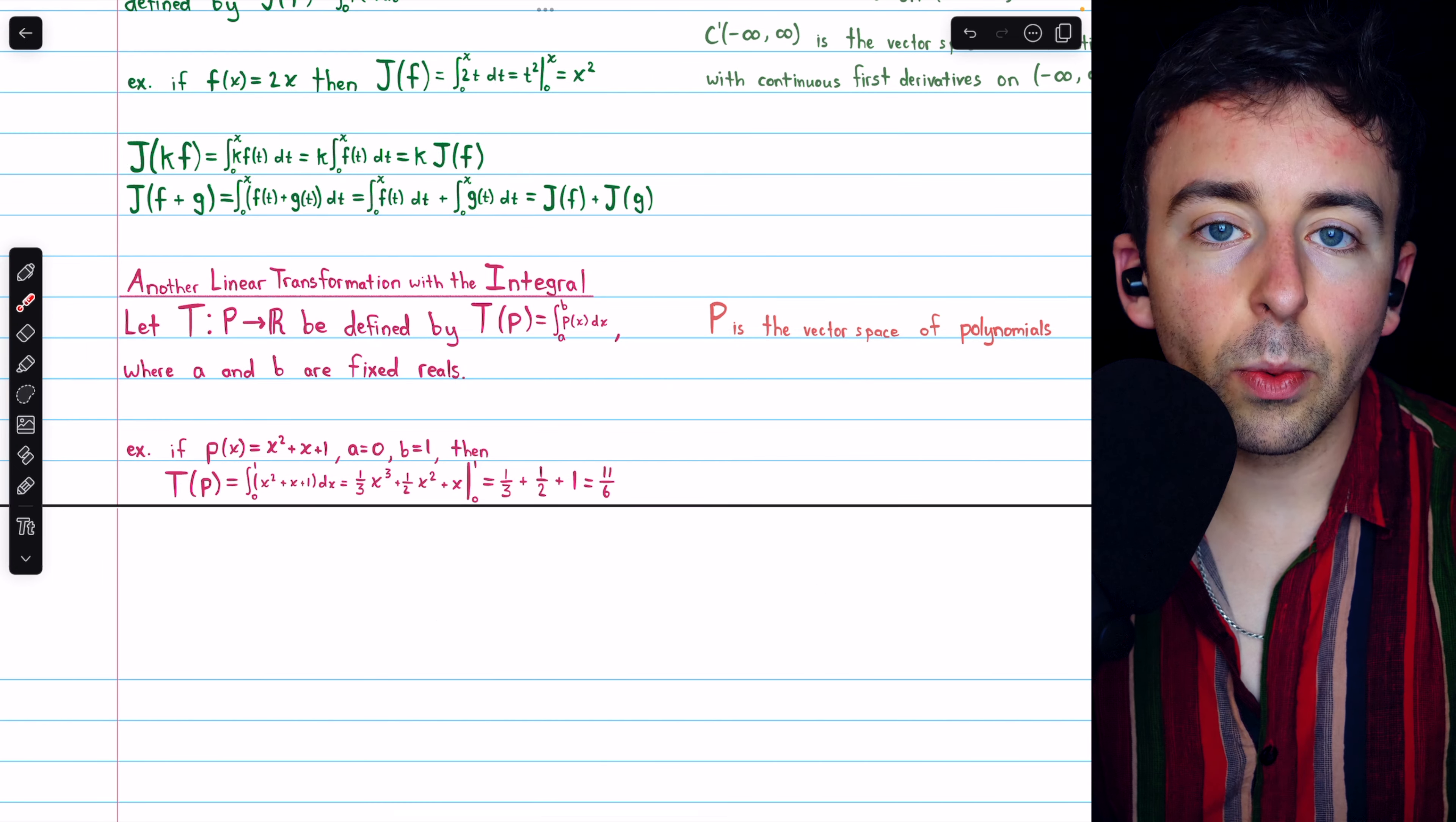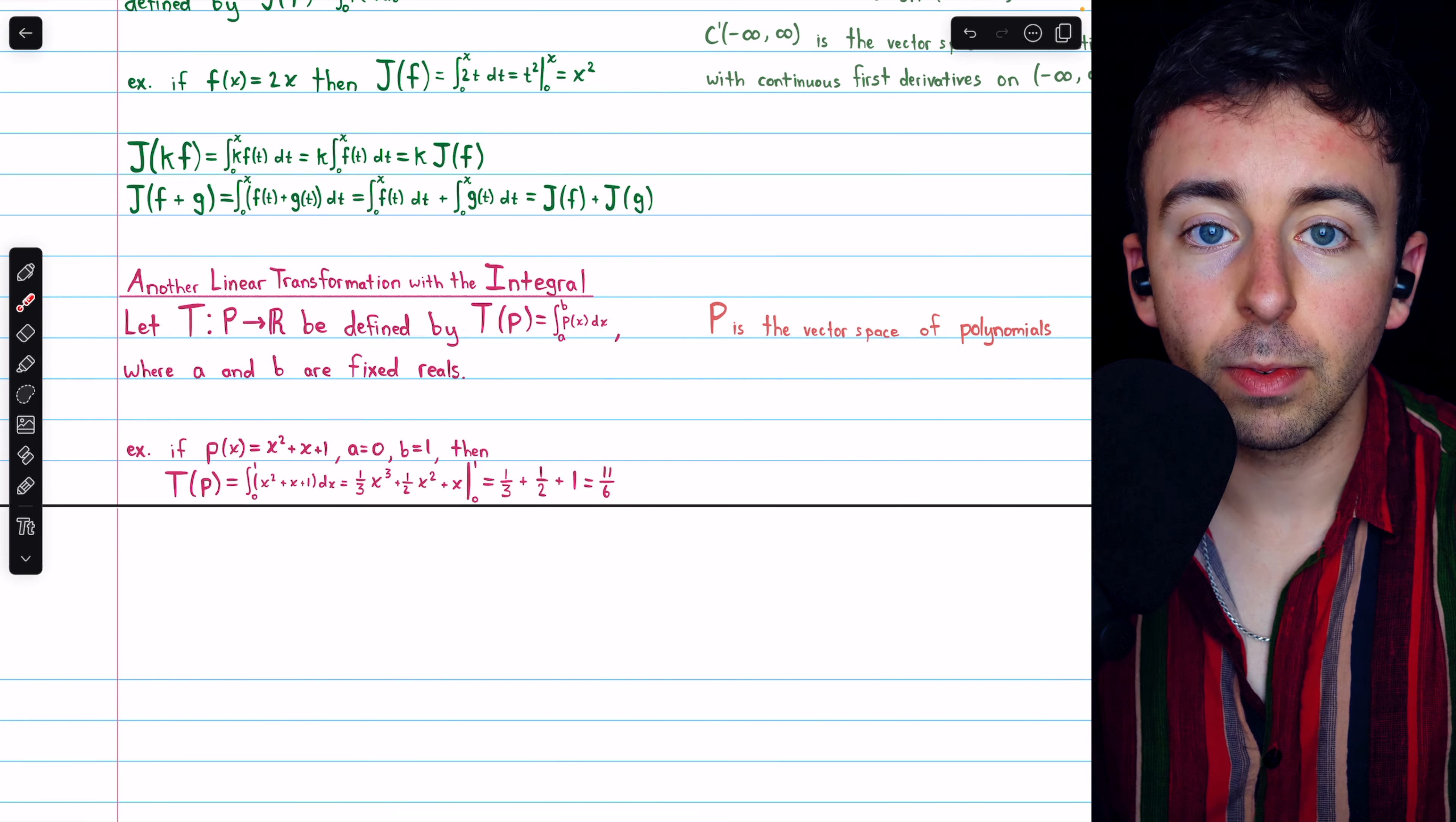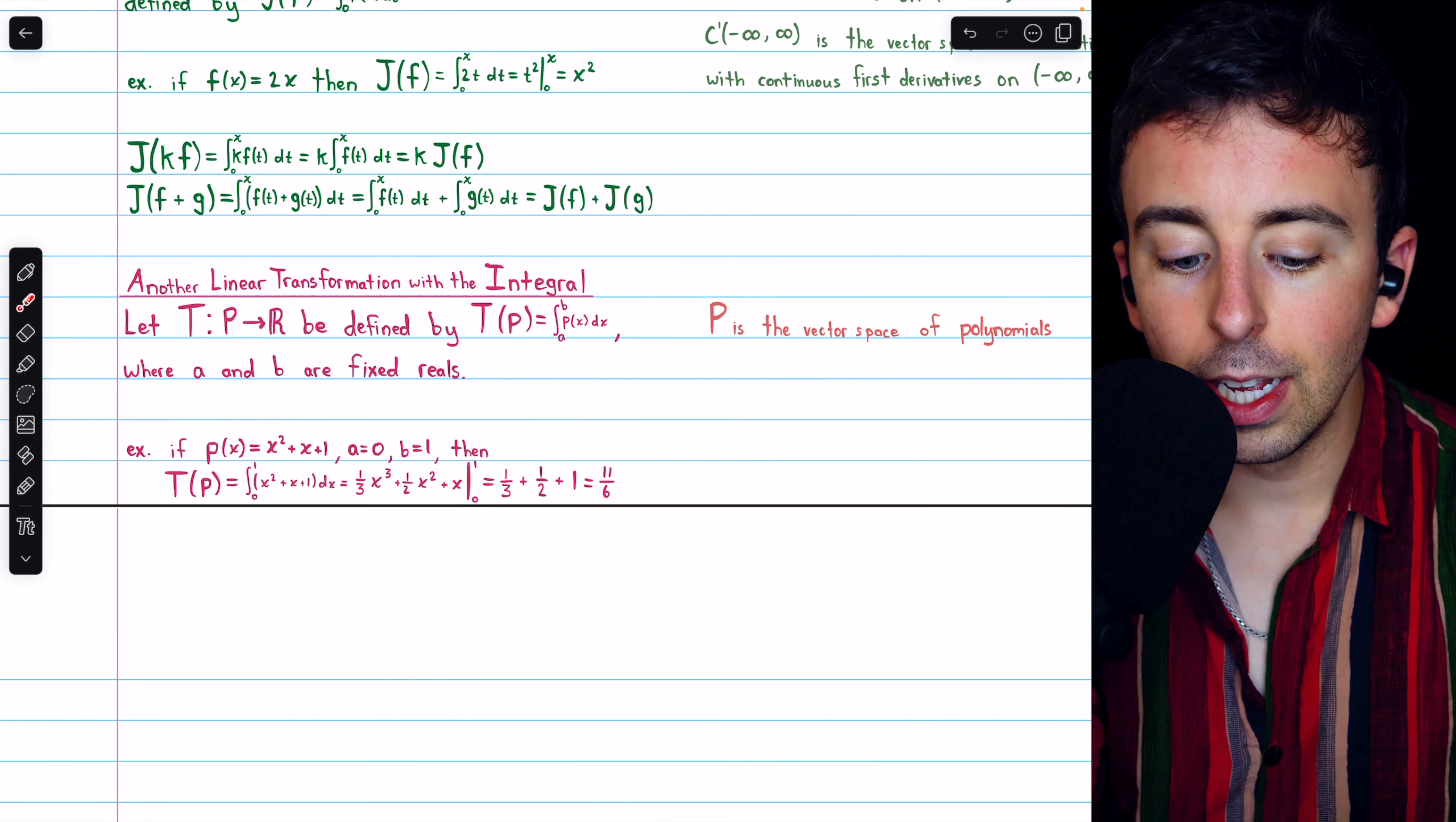And that's not the only way to view integration as a linear transformation. Here's another example. Let T be the mapping from the vector space of polynomials to the real numbers, defined like this.